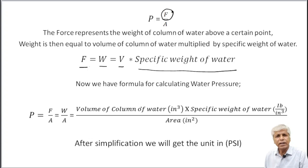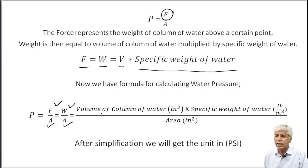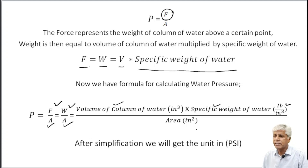Now the formula for calculating water pressure will be modified as: pressure equals force upon area, which equals the weight of the column of water upon area. Weight equals volume of column of water in cubic inches multiplied by specific weight of water in pounds per cubic inch, divided by the area in square inches. After simplification, we will get the unit in PSI, pounds per square inches.